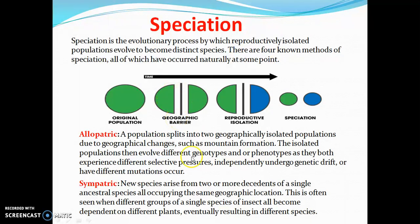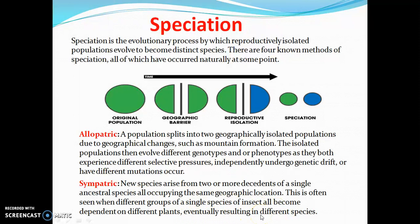What about sympatric speciation? New species arise from two or more descendants of a single ancestral species, all occupying the same geographical location. They are in the same geographical area but due to reproductive isolation they are not reproductively compatible. This is often seen when different groups of a single species of insect all become dependent on different plants, eventually resulting in different species.